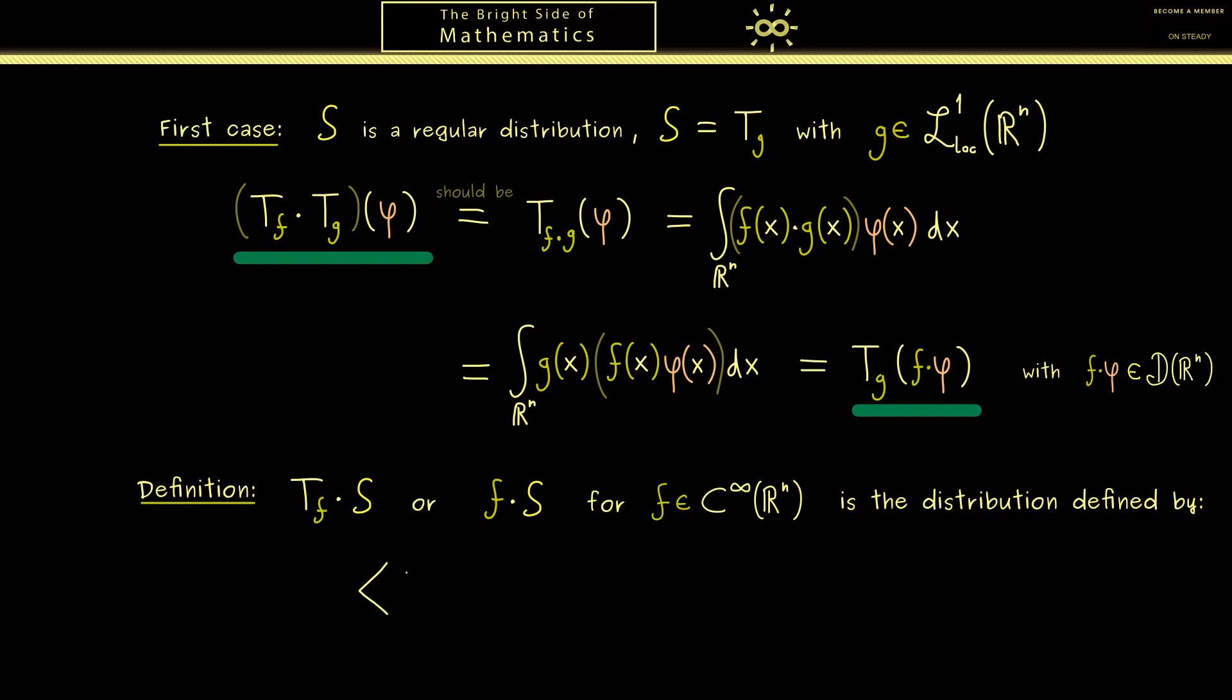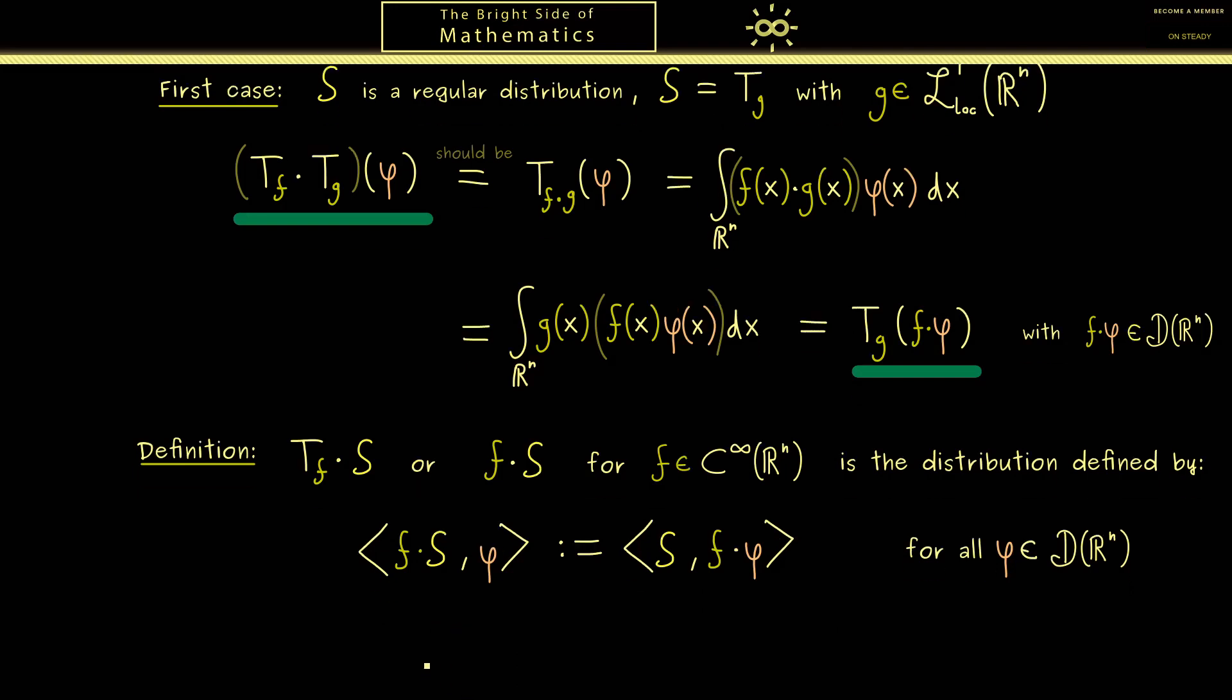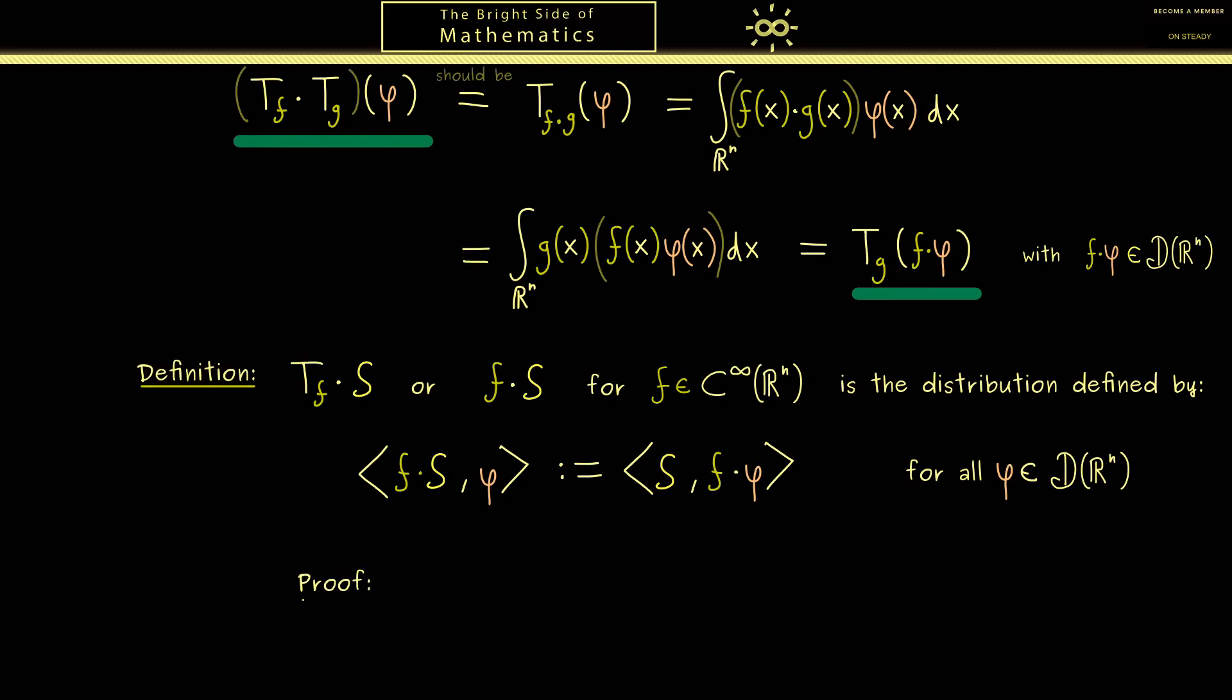OK, and maybe for the definition here let's use the duality pairing from the last video. In other words, we define the combination f times S with φ in this pairing. Now indeed this looks very nice because we just have to push this f to the right hand side. Hence this gives us our new distribution f times S where the formula is easy to remember. However, now one has to check that this new object indeed fulfills the two properties of a distribution. In short, we need linearity and continuity. And as you might guess, the proof here is not hard at all. So first, the linearity of this new map we immediately see.